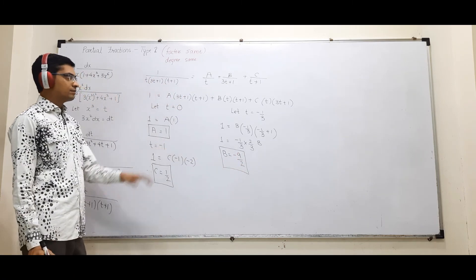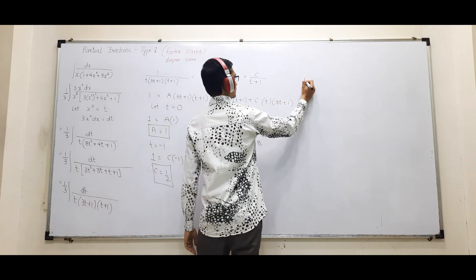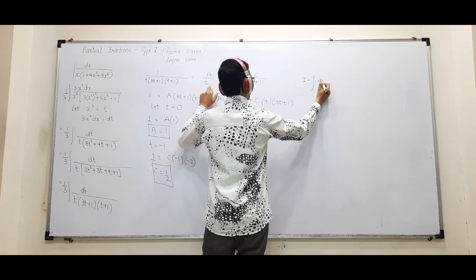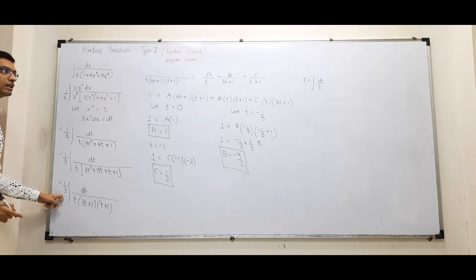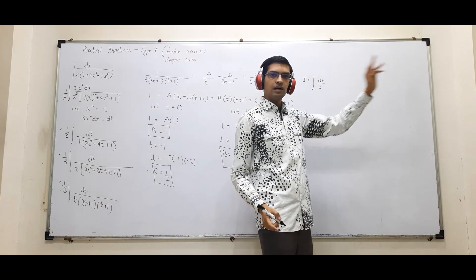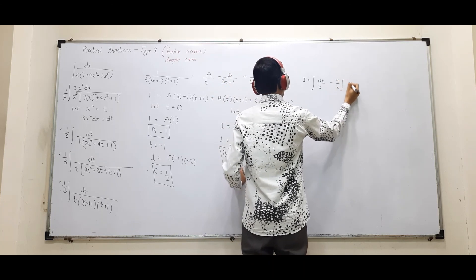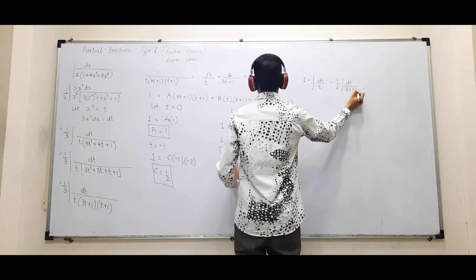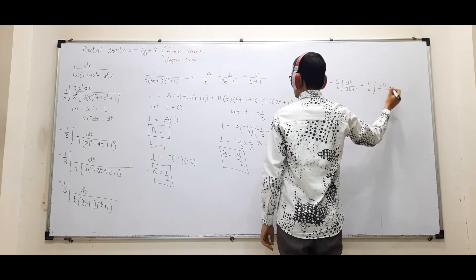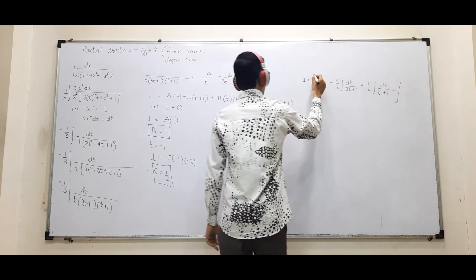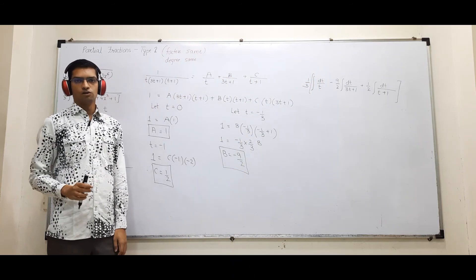A, B, C found — now integrate easily. Remember not to forget the (1/3) factor out front — multiply everything by 1/3. So the integral = (1/3)[A·∫dT/T + B·∫dT/(3T+1) + C·∫dT/(T+1)], with A=1, B=-9/2, C=1/2. You can solve the logarithm integration part on your own.